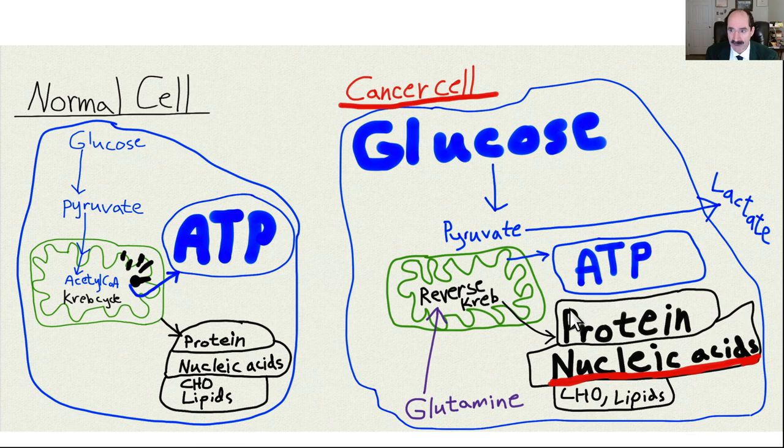But the cancer cell doesn't want to work at all. All it wants to do is divide itself into two cells. It takes glutamine, a widespread and abundant amino acid, and uses it to make lots of protein and especially nucleic acids — the rate-limiting step for cell division. That's what cancer does: it keeps replicating until it kills the person.